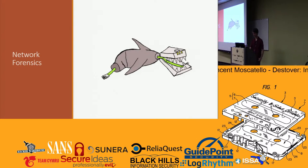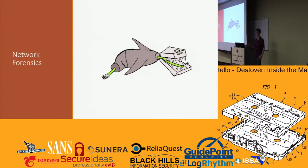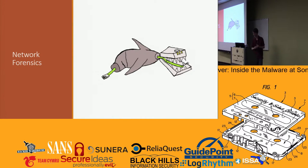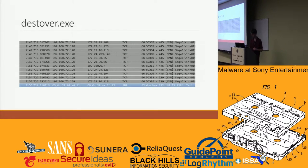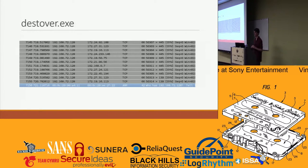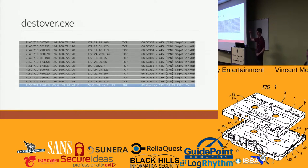Doing some network forensics of this executable as it goes through its different stages is really helpful to understand what kind of hosts the malware contacts and how it propagates. Using Wireshark, looking at the original destover.exe, you can see it makes lots and lots of connections to port 445 and 139. The logs just get filled up — it's really loud and noisy. These services are NetBIOS and SMB, because we have a worm here that spreads using Windows File Sharing.